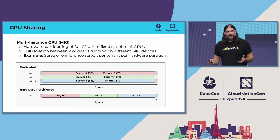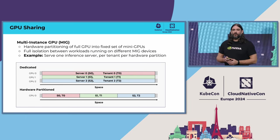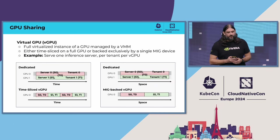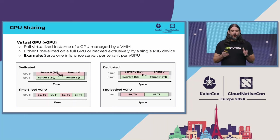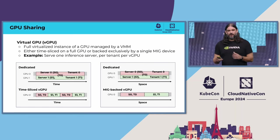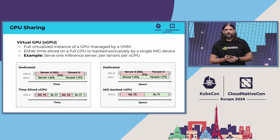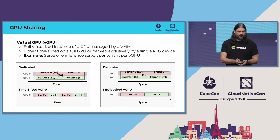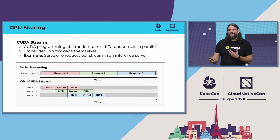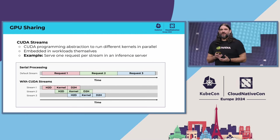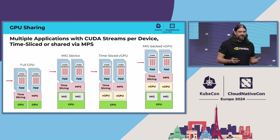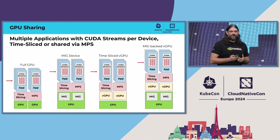MIG is similar to MPS in that the resources of the GPU are space partitioned, but they are done so at the hardware level rather than in software, meaning that MIG devices are suitable for multi-tenant environments, where MPS is not. vGPUs are interesting in that they can be configured for either time slicing or space partitioning using MIG, with the added property that each vGPU is wrapped in a virtual machine, making them suitable for multi-tenant environments under both configurations. Unlike the previous sharing techniques which provide shared access to a GPU at the system level, CUDA Streams is a programming abstraction that allows you to run multiple kernels in parallel from within a single application. With all of these sharing strategies in place, you can layer them on top of one another in order to maximize GPU utilization across all of your workloads.